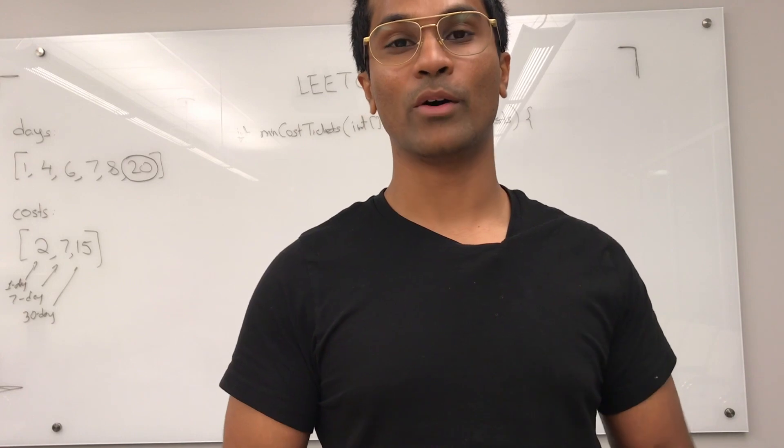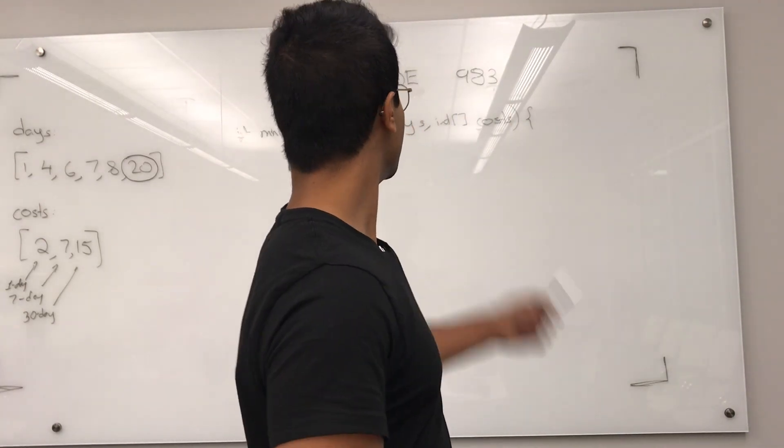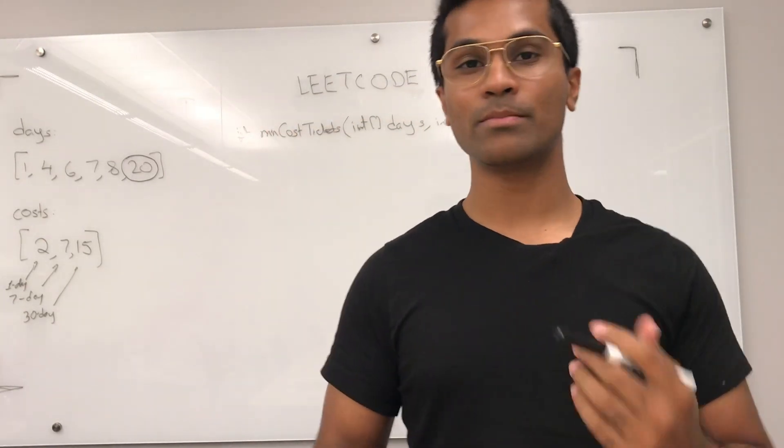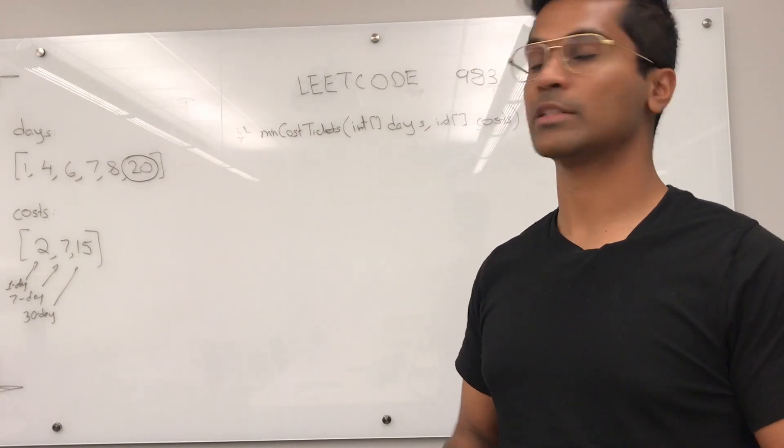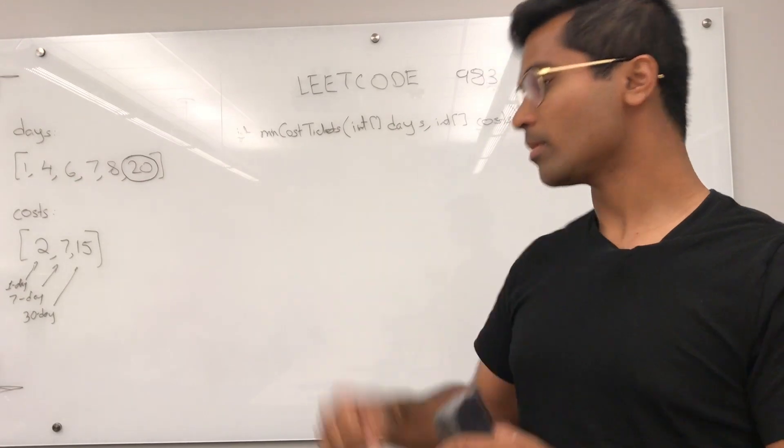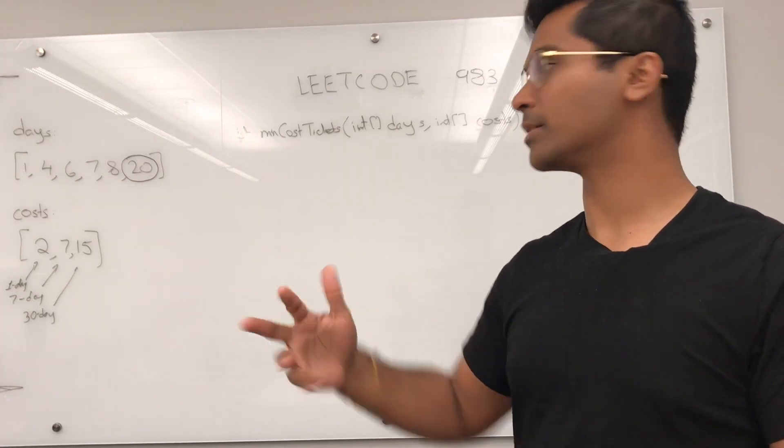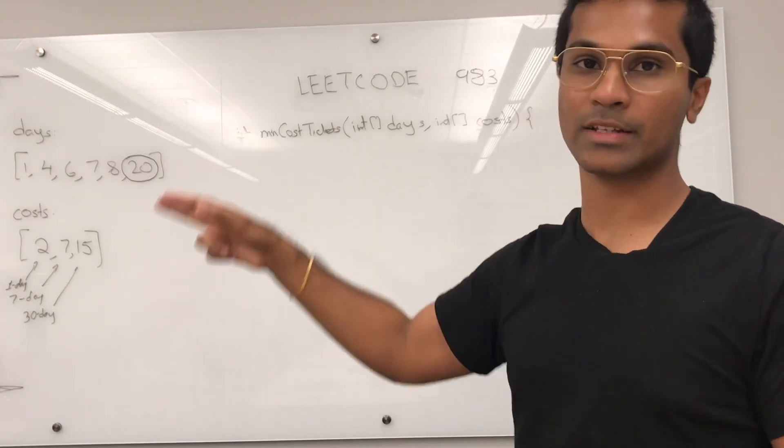What's up everyone? Today we're going to be going over LeetCode 983 minimum cost ticket. The input is going to be two integer arrays and the output is going to be the minimum cost that we have to pay to travel on the days given in the days array.